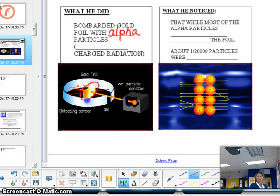And he bombarded that gold foil with what's called alpha particles. Alpha particles are in table O. They are positively charged forms of radiation. So inside this box is a particle that releases or emits alpha particles. And he fired those alpha particles at the gold foil.